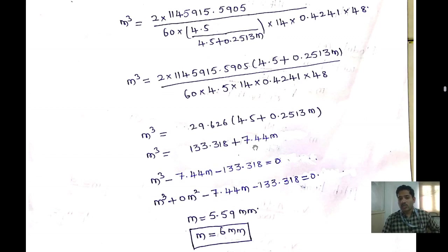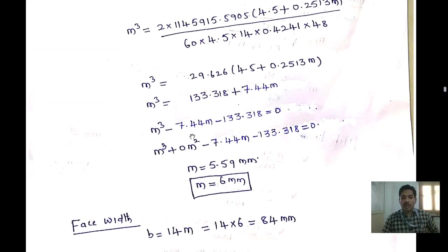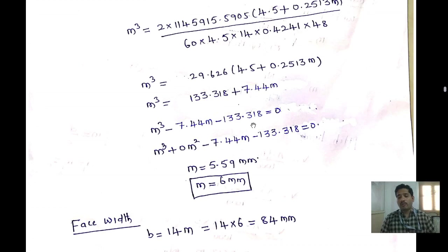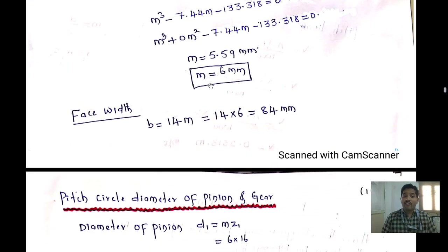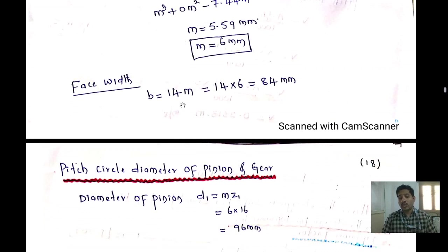This forms a cubic equation M³ − 7.44M − 133.318 = 0 of the form AX³ + BX² + CX + D = 0, where B=0, C=−7.44, D=−133.318. Solving using a calculator, M = 6 mm. Then face width B = 14 × 6 = 84 mm.